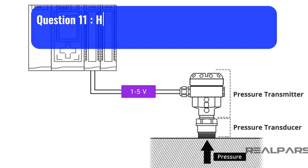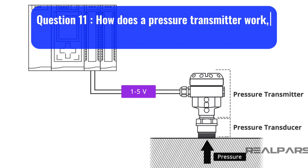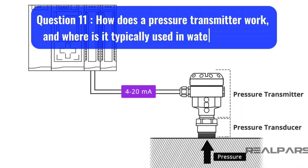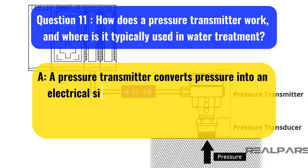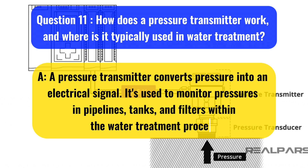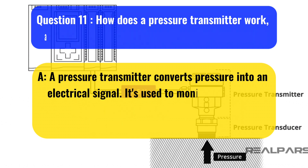Question 11: How does a pressure transmitter work and where is it typically used in water treatment? A pressure transmitter converts pressure into an electrical signal. It is used to monitor pressures in pipelines, tanks, and filters within the water treatment process.